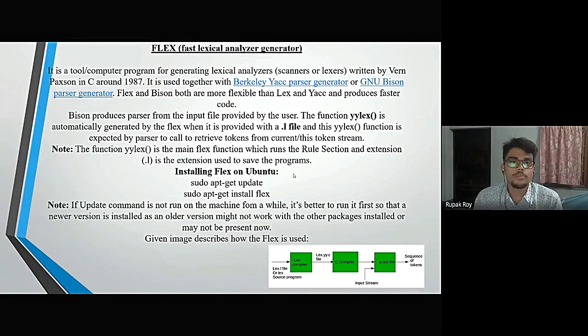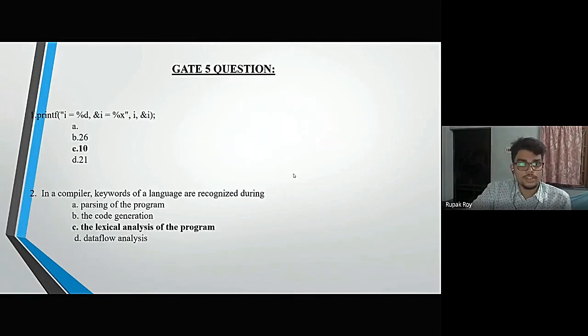The function yylex is automatically generated by Flex from the .l file. The yylex function is called by the parser to retrieve tokens from the token stream. yylex is the main Flex function which runs the rule selection. The .l extension is used to save Flex programs. Here it is mentioned how to install Flex on Ubuntu by running a command, and there is a flowchart to describe how Flex is used. Here are a few GATE questions.